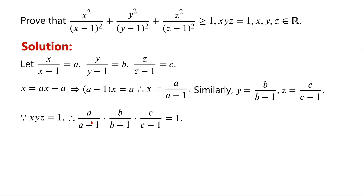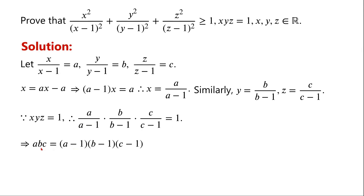So [a/(a-1)] · [b/(b-1)] · [c/(c-1)] = 1. Therefore, abc = (a-1)(b-1)(c-1).